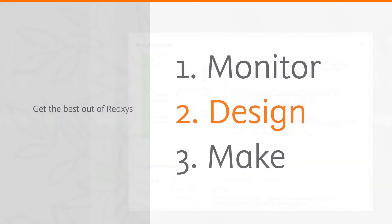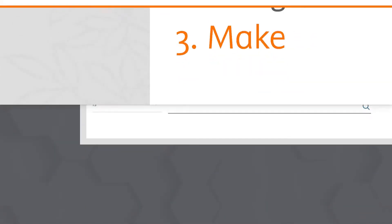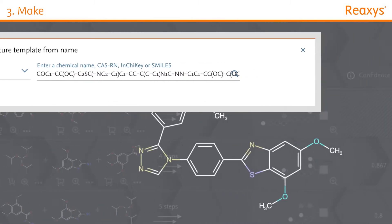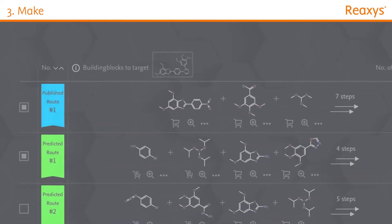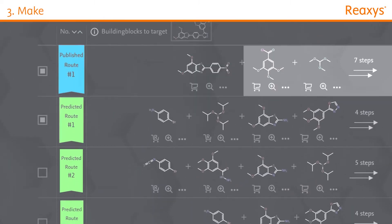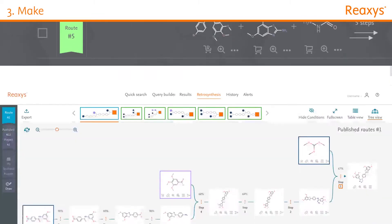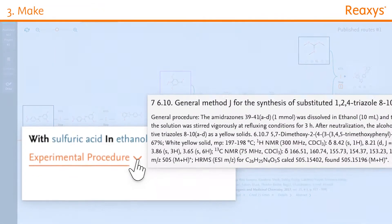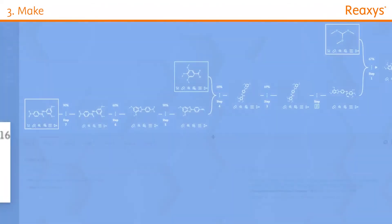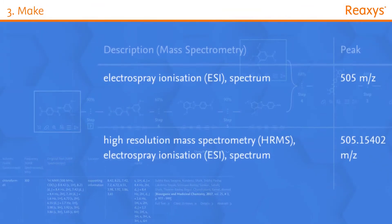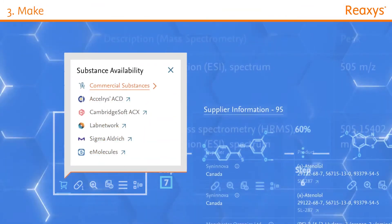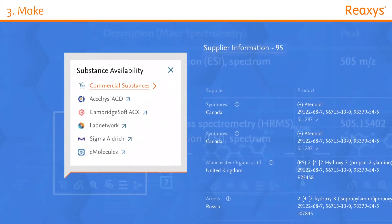Want to start working in the lab? ReAxis provides all the information you need. Search for a preparation or reaction of your compound of interest. Plan and organize synthesis routes with the synthesis planner, integrating published and predicted routes. Execute reactions with experimental procedures excerpted from literature and easily validate all your steps with spectra information. Quickly discover where and at what cost you can purchase your materials from over 500 commercial suppliers.